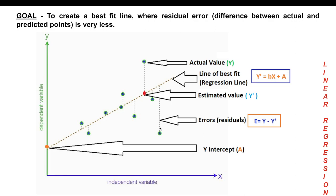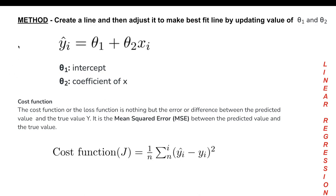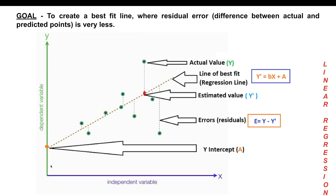To minimize the residual error, we sum up all the residual errors and try to minimize them by reducing the cost function. The cost function comes from these residual errors. In the equation, y_i (y-hat) is the estimated or predicted value — for example, the predicted weight — and theta_1 is the intercept (c), and theta_2 is the slope (m) multiplied by x_i, which is the input value.